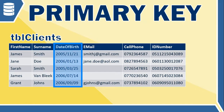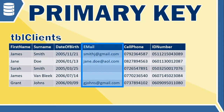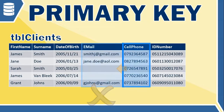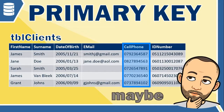Can two people be born on the same day? Yes, so date of birth is not a good primary key. Can two people have the same email address? Let's assume they can't — but does everyone have an email address? In this table you can see that not everyone does, so it's not a suitable primary key field because the field can be empty. Can two people have the same cell phone number? Probably not.